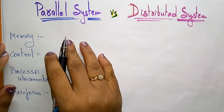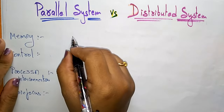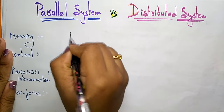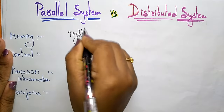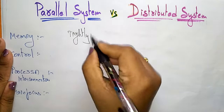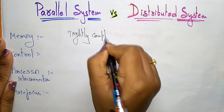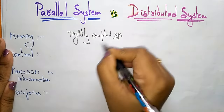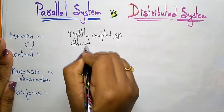If you take memory, the parallel system is a tightly coupled system because there is a shared memory.